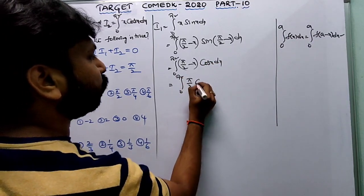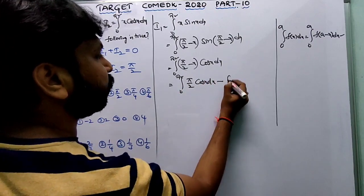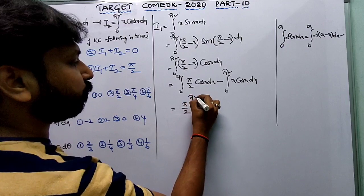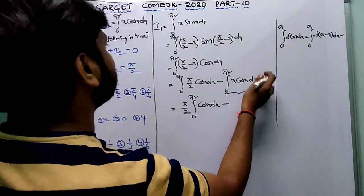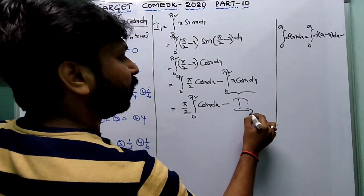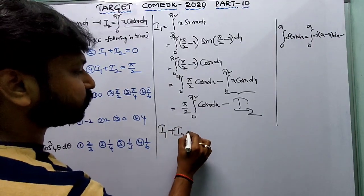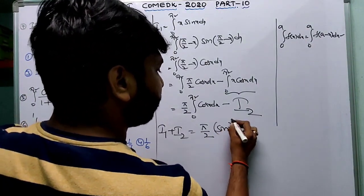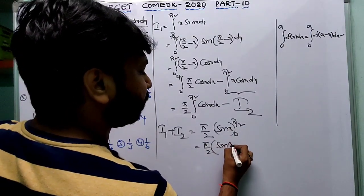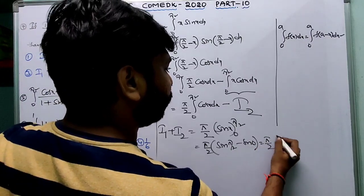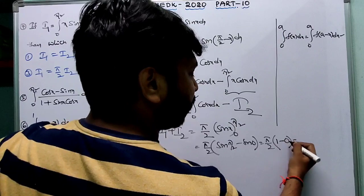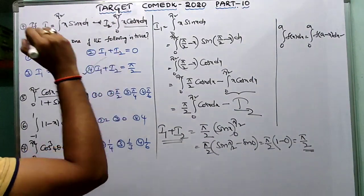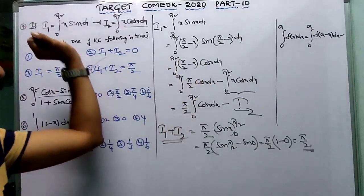This splits into integral from 0 to π/2 of (π/2)·cos x dx minus integral from 0 to π/2 of x·cos x dx. That equals (π/2)·[sin x] from 0 to π/2 minus I2. So I1 = π/2·(sin 90° minus sin 0°) minus I2 = π/2·1 minus I2. Therefore I1 plus I2 = π/2. The fourth option is the correct answer.